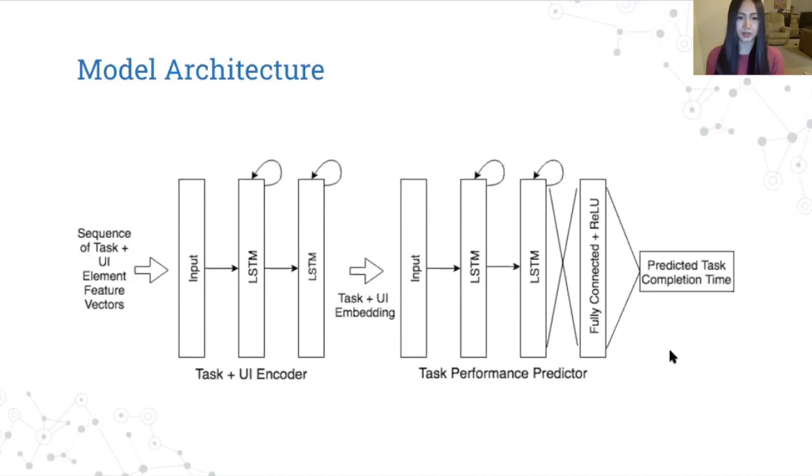So our model architecture was taken largely from deep menu, but we made some modifications. Our model takes in a UI and a sequence of tasks and predicts the task performance metric for each task. But we use a hierarchical LSTM model, and the recurrent layers help capture learning effects as users become more familiar with the UI. So on the left, we have the encoder. For each task, it takes in a sequence of feature vectors, one for each element in the UI, that describe the UI element in the task. And at the end of this sequence, it generates embedding for the task in UI, which then goes to the predictor model, that generates a scalar prediction for the task performance metric. So the entire UI is input for each task in the sequence, because the UI may change after certain interactions, like for instance, dragging and dropping an element will change its location for the next task.